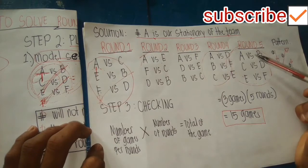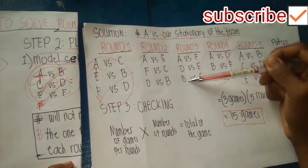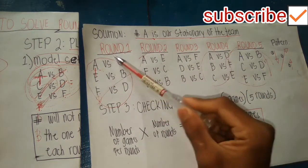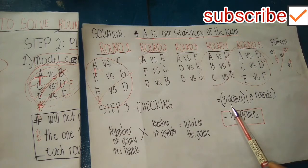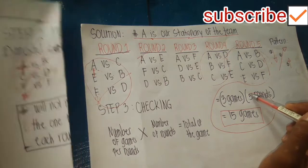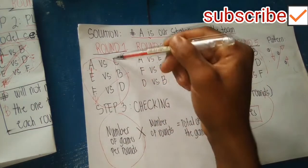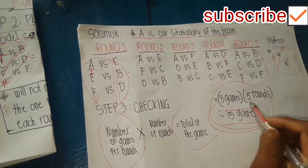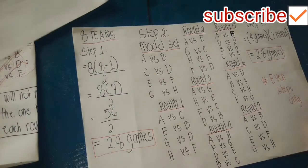Step 3 is checking. We count the games: there are 3 games in each round, and we have 5 rounds. So 3 games times 5 rounds equals 15 games total. This confirms our Step 1 formula result of 15 games. Everything checks out.